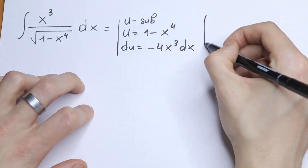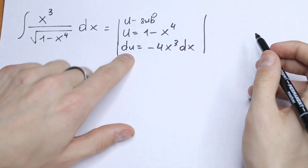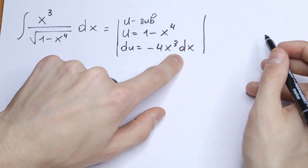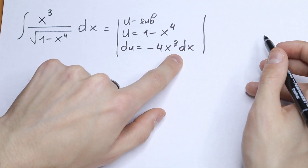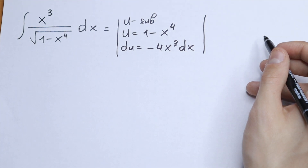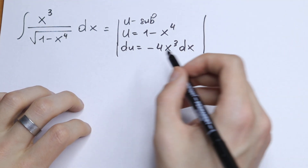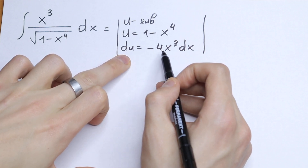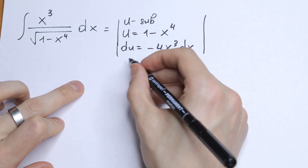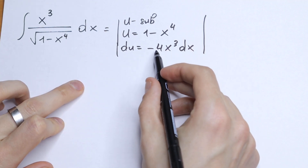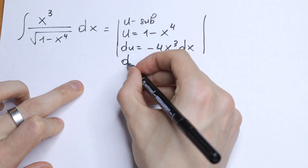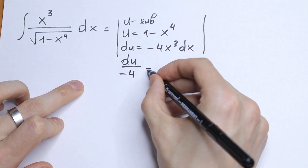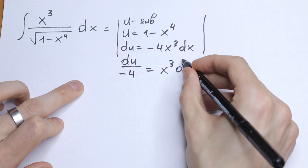So what do we do next? We have du equal to minus 4x cubed dx. We need to isolate x cubed dx, so we divide both sides by minus 4. We get du over minus 4 equals x cubed dx.